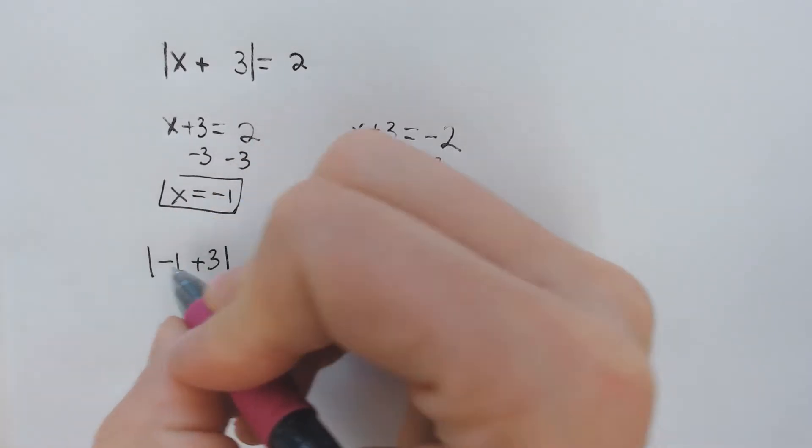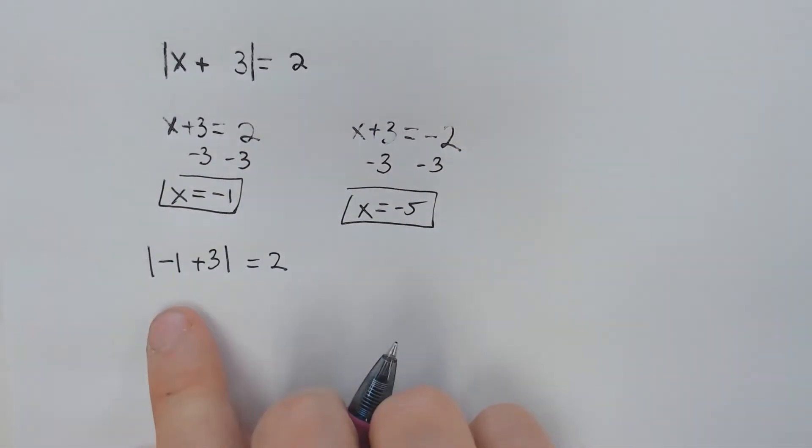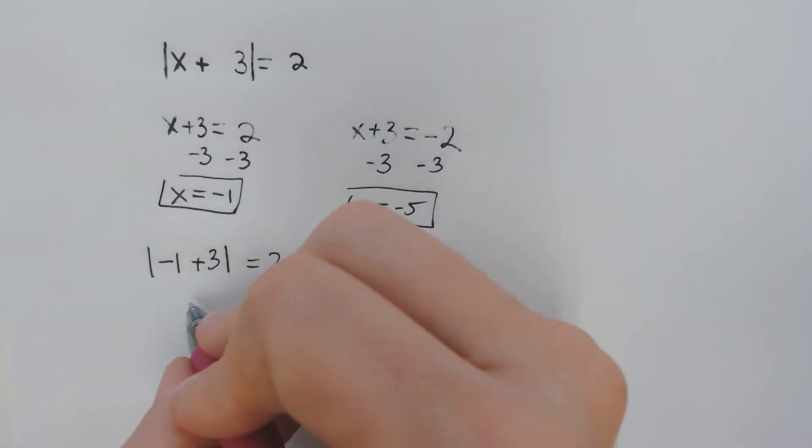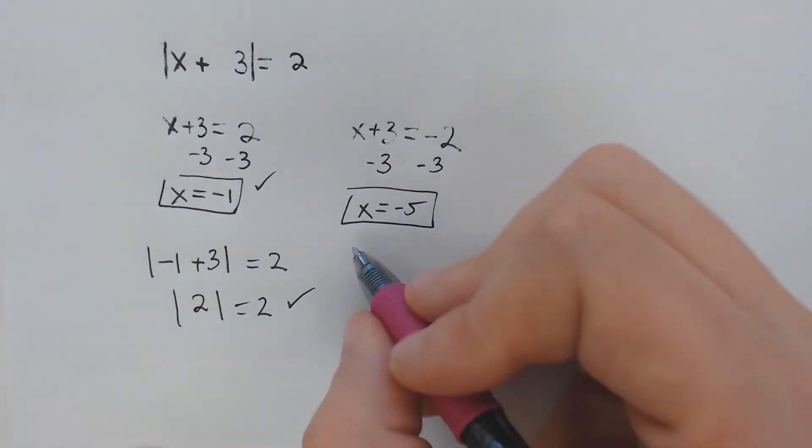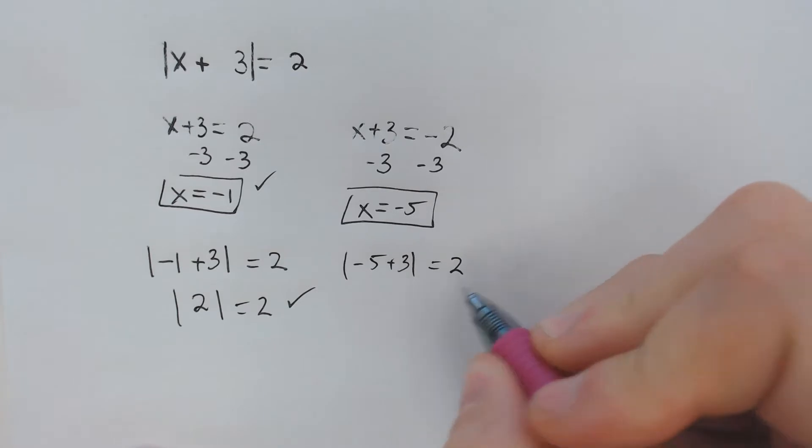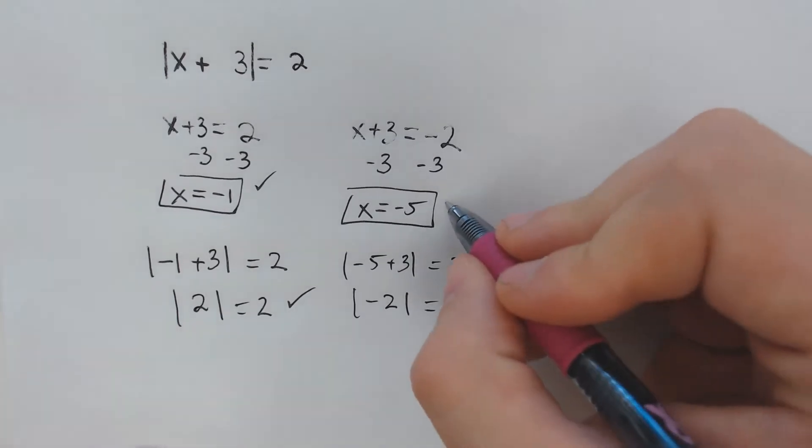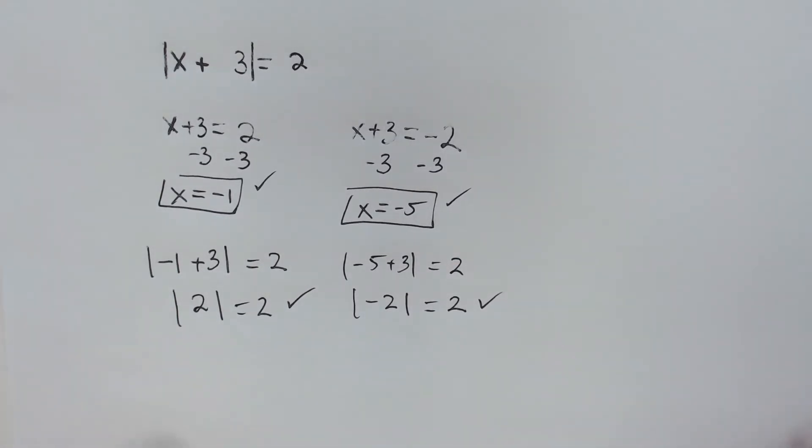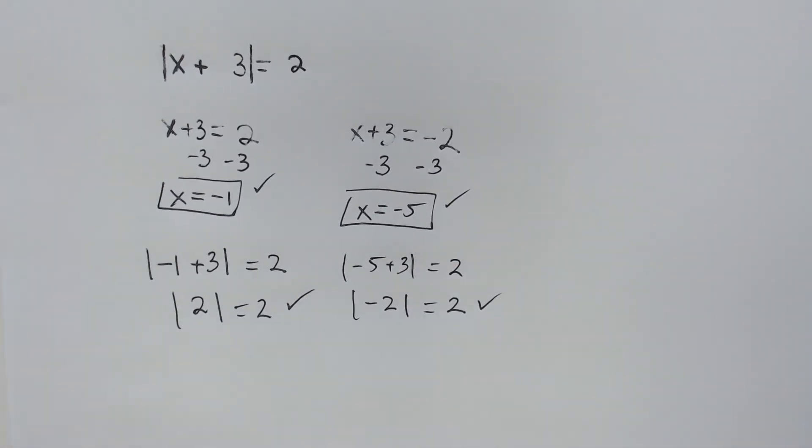It's so boring to plug these things in. Negative 1 plus 3 is 2 and the absolute value of 2 is 2, it works out. If we plug in negative 5 plus 3, the absolute value of that is 2 because you get negative 2 and the absolute value of any negative number spits out the positive answer. So the negative 5 works as well. That's how you're officially supposed to do it.